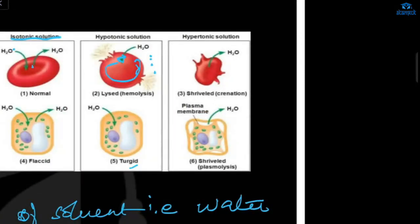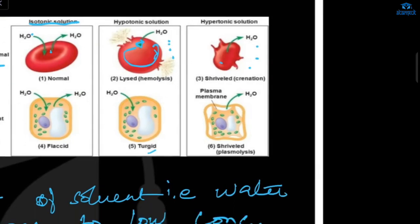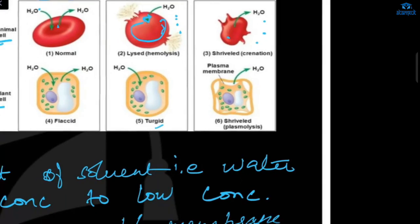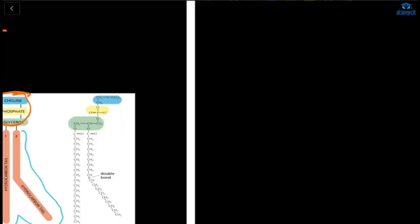In hypertonic solution, what happens here? The water content inside the cell is more, and outside the surrounding it's less. So water will get outside, and the cell will shrink and shrivel. In case of animal cell, it is called crenation. And in case of plant cell, it is called plasmolysis. Now let's start to the next topic.